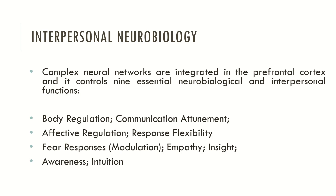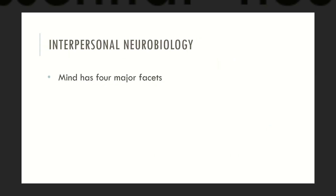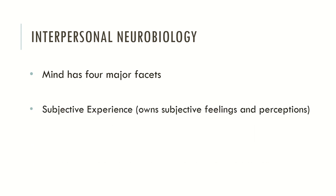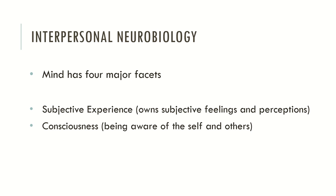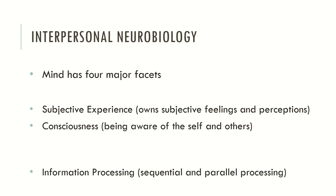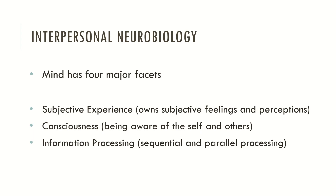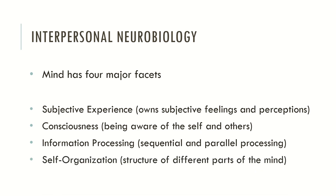According to the interpersonal neurobiology framework, the mind has four major facets. Subjective experience relates to one's own experience of subjective feelings and perceptions. Consciousness is being aware of the self and others — including different cognitions, emotions, intentions and needs. Information processing is related to sequential and parallel processing of different information from human spheres, such as thoughts, emotions, behavior or motivations. And self-organization is related to the structure of different parts of the mind.